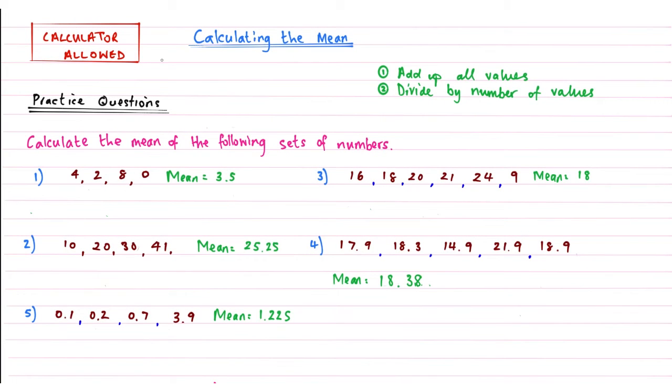Okay, so welcome back. As you can see, those are the quick answers there. So the mean for question 1 is 3.5, the mean for question 2 was 25.25, the mean for question 3 was 18, the mean for question 4 was 18.38, and the mean for question 5 was 1.225. If you've got those all right, good job.